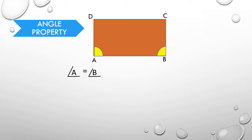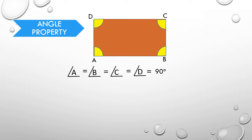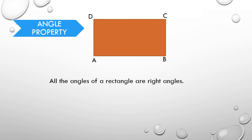And the most important point of a rectangle is that angle A, angle B, angle C, and angle D — all the angles are equal to 90 degrees. That is, all the angles of a rectangle are equal to 90 degrees. Hence, this is the difference between a parallelogram and a rectangle. A rectangle possesses all the properties of a parallelogram, but all the angles of a rectangle are equal to 90 degrees, or right angles.